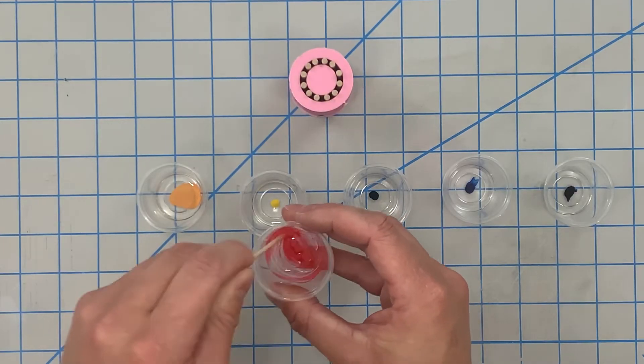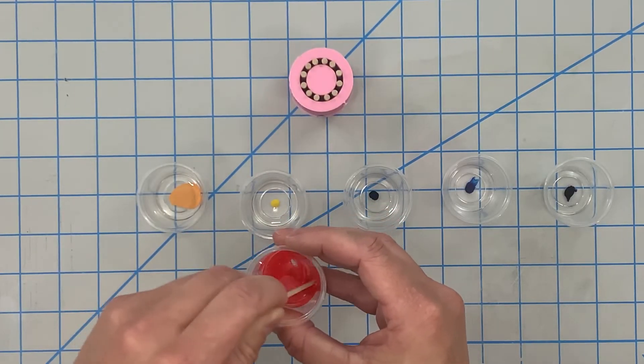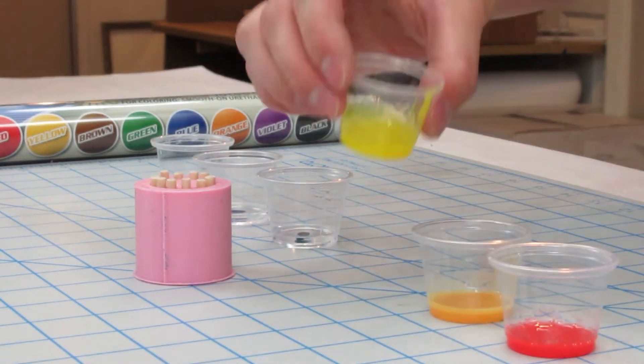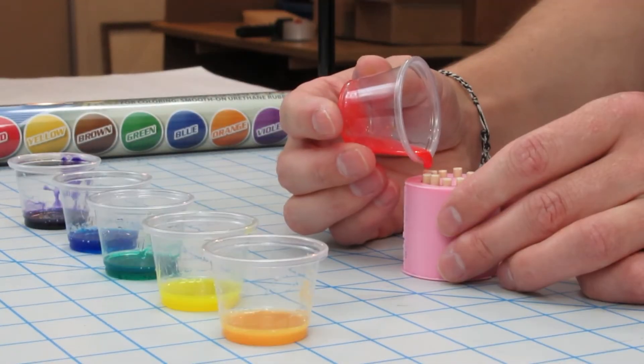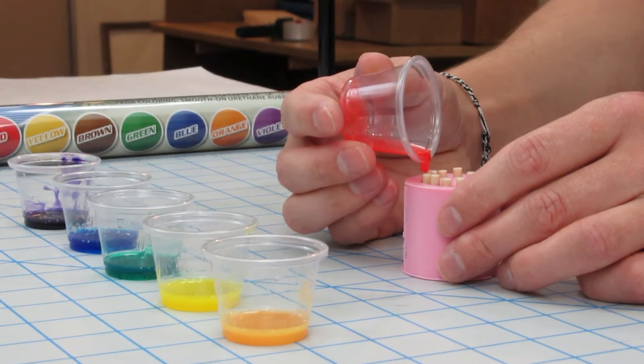For these rings, I chose a rainbow pattern. I pour each color in separately.